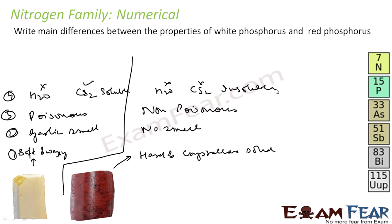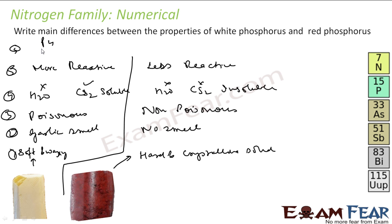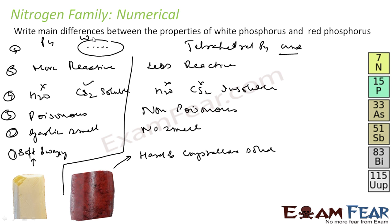White phosphorus is more reactive and catches fire easily, while red phosphorus is less reactive. White phosphorus exists as P4 tetrahedral units held together by weak van der Waals forces of attraction. Red phosphorus has P4 tetrahedral units linked by covalent bonds between the units. These are the main differences between white and red phosphorus.